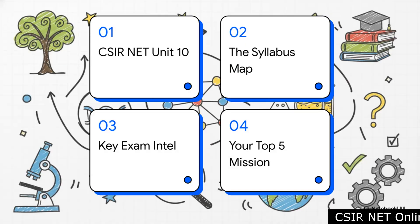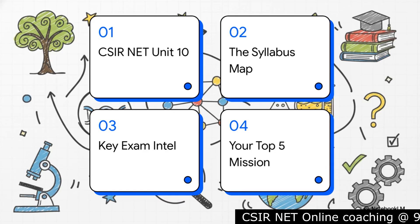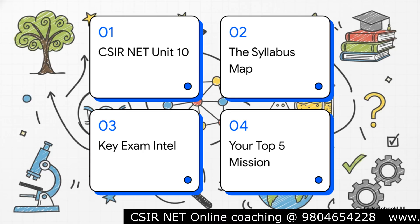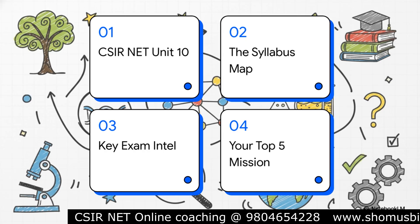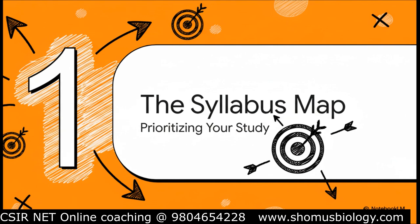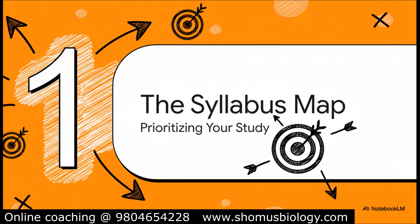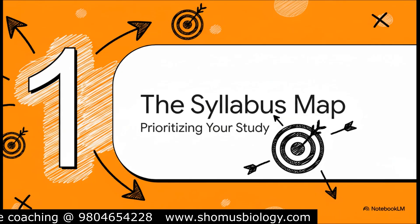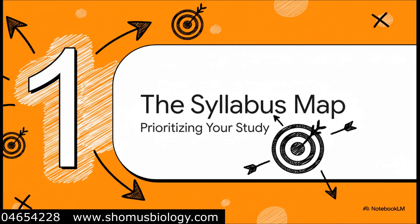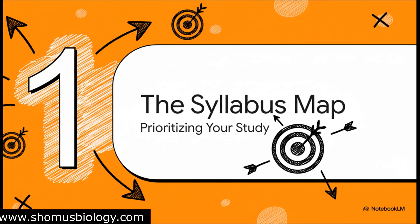Here's our game plan: first, we're going to map out the entire syllabus. Then I'm going to share some key intel about the exam pattern itself — stuff you absolutely have to know. And finally, we'll zero in on your top five mission-critical topics. A really common mistake students make is trying to give every single topic equal time and energy. But the real secret — the key to maximizing your score — is knowing exactly where to focus. It's all about prioritizing.